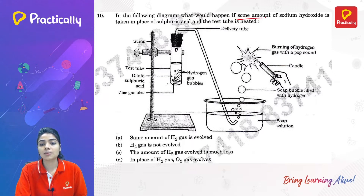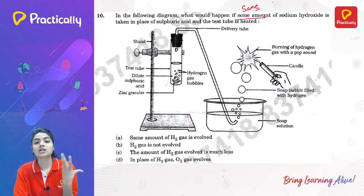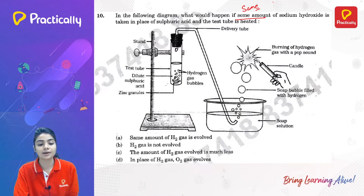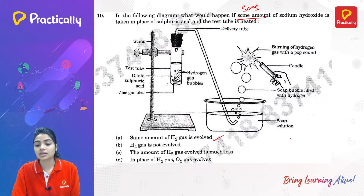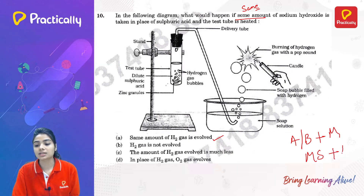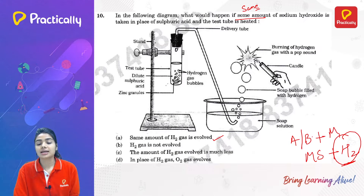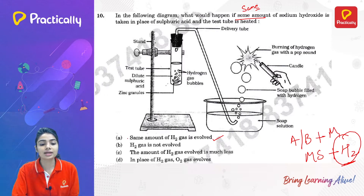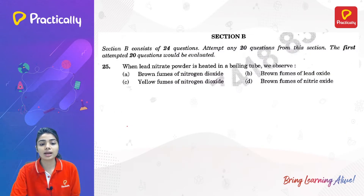What would happen if the same amount of sodium hydroxide is taken in place of sulfuric acid and the test tube is heated? The same amount of hydrogen gas is evolved, because whether it is an acid or a base reacting with a metal, it forms a metallic salt plus hydrogen gas. Hydrogen gas is produced in both cases, so option A is the correct answer.